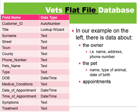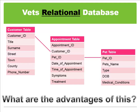If you look on the left, there are three main things going into this flat file database: there is information about the owner, there is information about the pet, and there is information about any appointments. You can see that from this we can actually break it down into three tables. Let's have a look at what the advantages are of breaking it down into three tables rather than one big table.